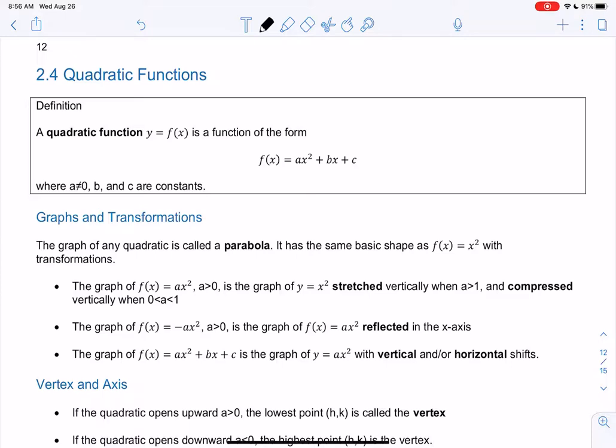So quadratics look like this: ax squared plus bx plus c. Quadratics have an x squared term.